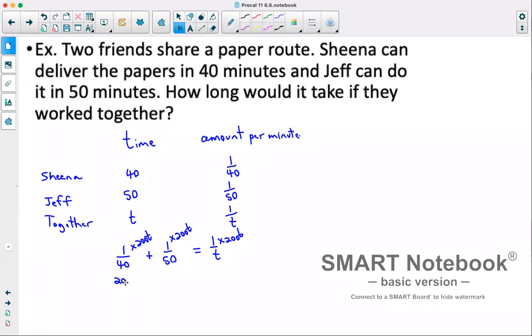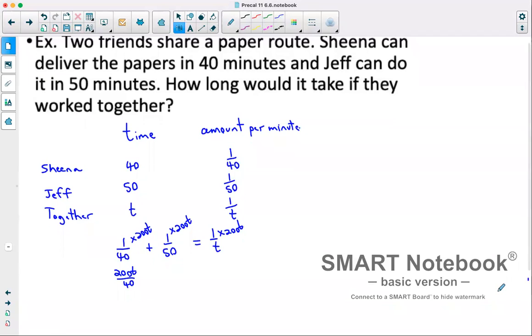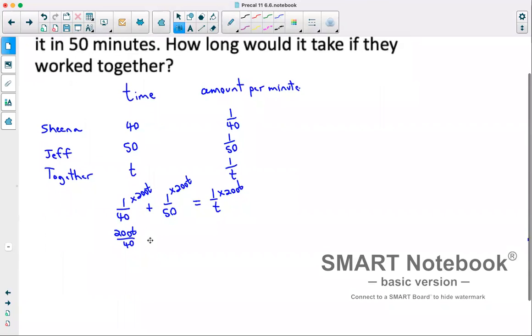That gives us 200T over 40 plus 200T over 50 equals 200T over T. So 200 divided by 40 is 5, so we have 5T plus 200 divided by 50 would be 4T equals 200T divided by T. The T's cancel out, so equals 200.